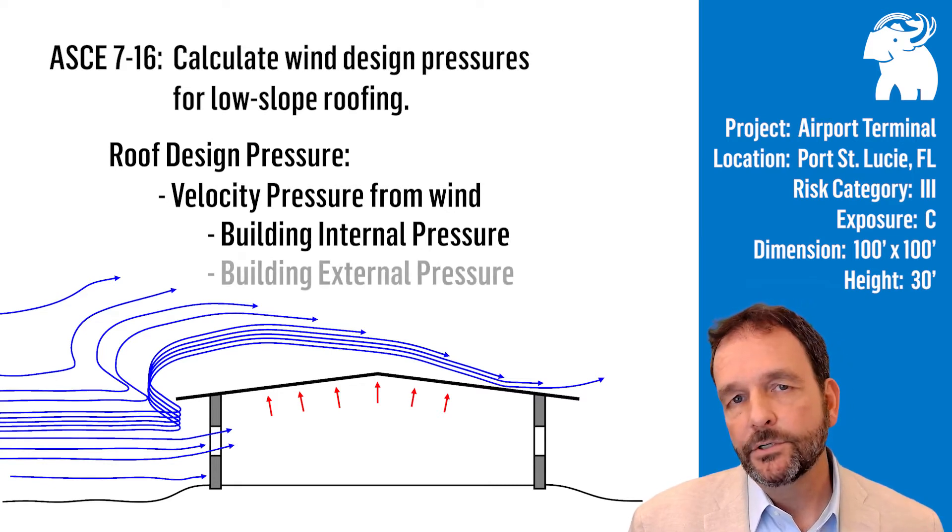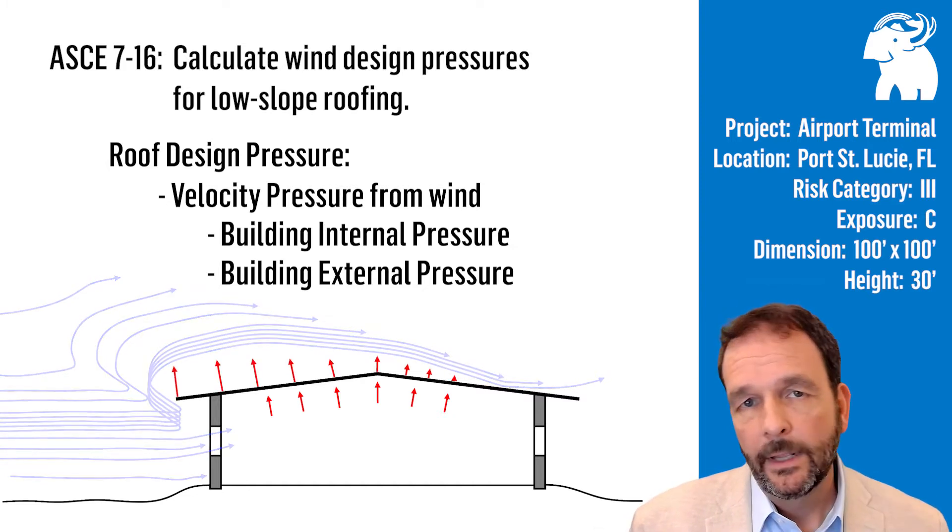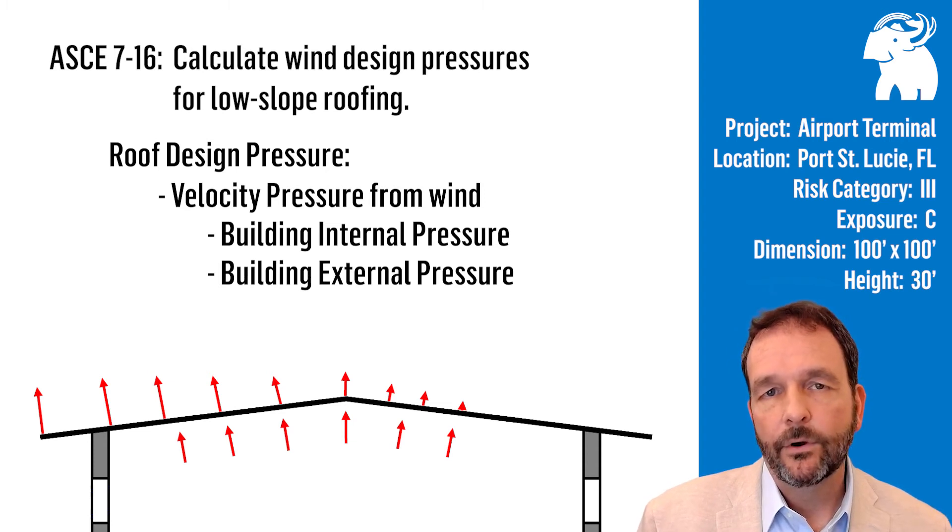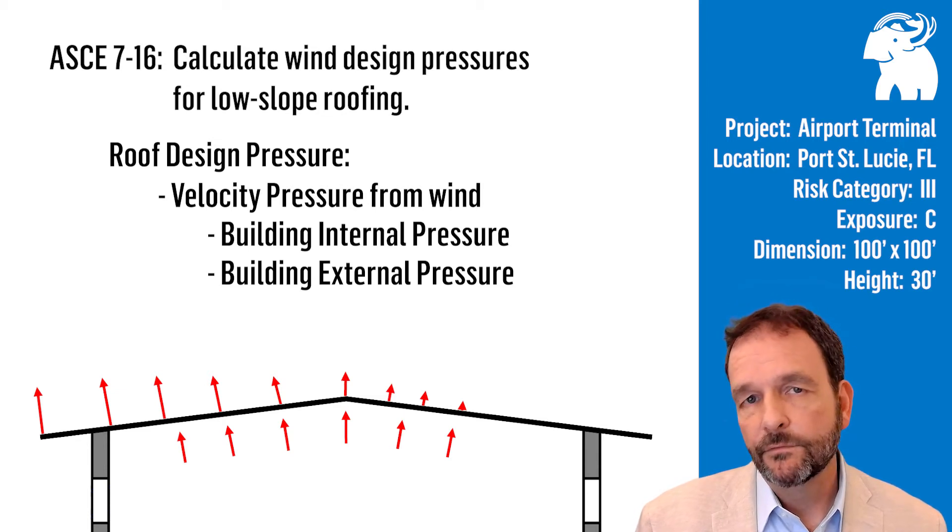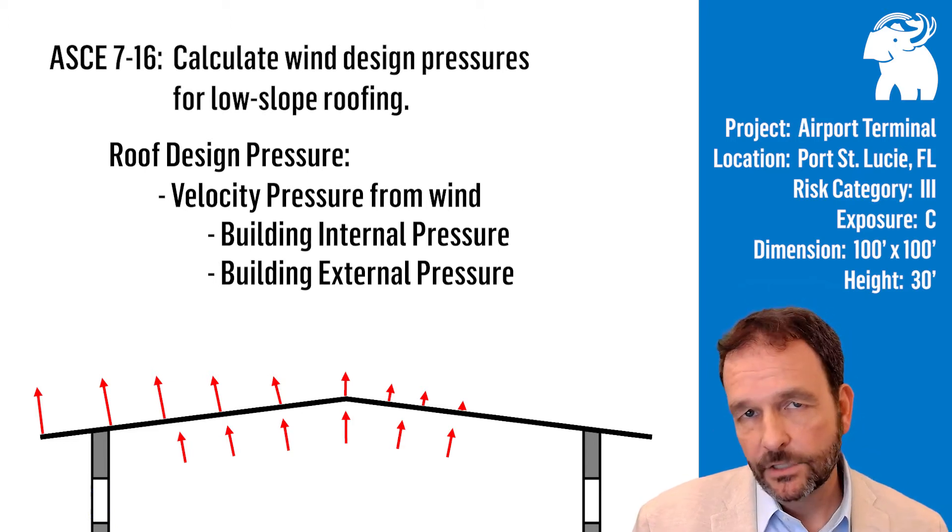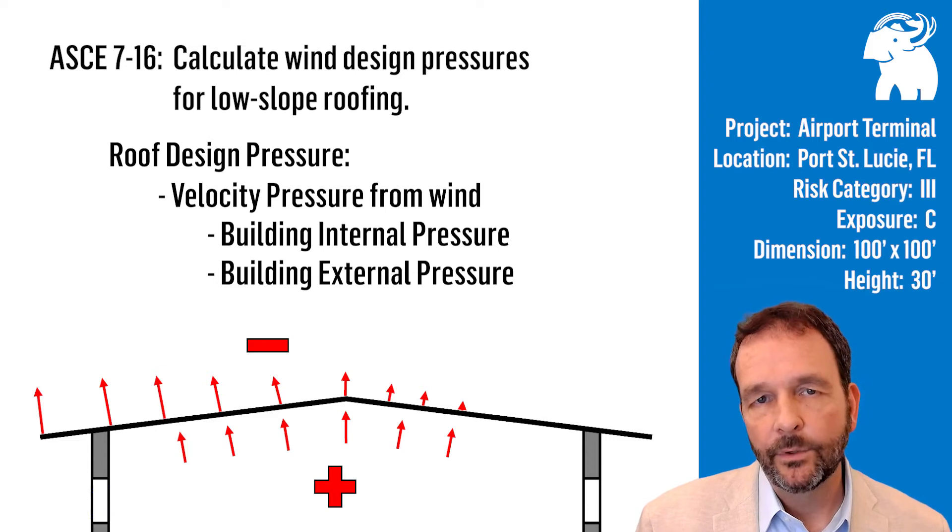The next component of pressure is the velocity pressure that flows up and over the building roof. That's based on several variables regarding the roof geometry, the presence of a parapet, the roof slope, an overhang, things like that. So you've got the velocity pressure flowing around the surrounding terrain, then that strikes the building. One component, the internal pressure component, gets inside. The external goes up and over the roof. The combined effects are the design wind pressure that we're looking for.